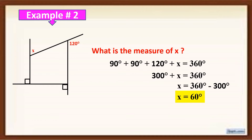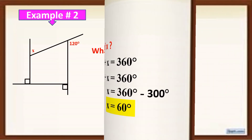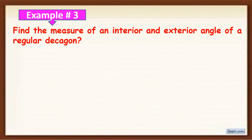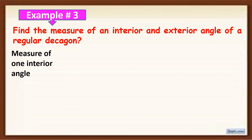Now let's have example number 3. Find the measure of an interior and exterior angle of a regular decagon. Since the given is a regular polygon, to get the measure of one angle of a regular polygon we use the formula 180 degrees times (n minus 2) all over n, where n is equal to the number of sides of the given polygon.